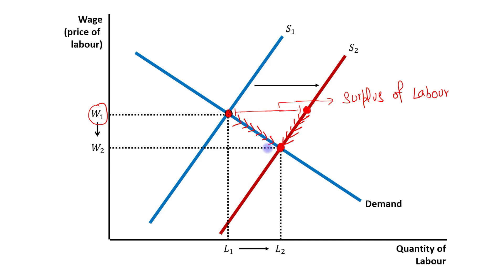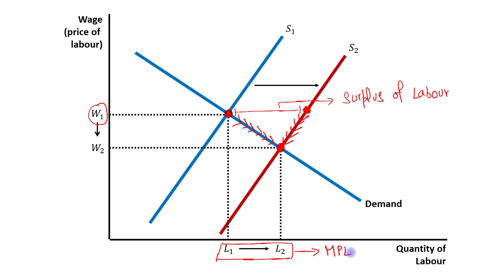So this is the economics of how we achieve the new equilibrium. One more point: as we can see, the equilibrium employment has been increased. As the number of workers employed increases, the marginal product of labor will be decreased.